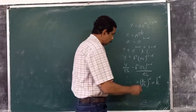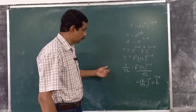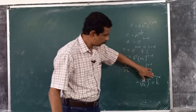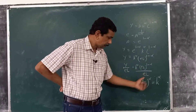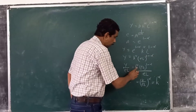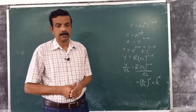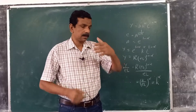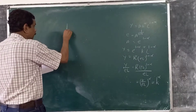We can denote this as k-tilde raised to alpha, where y by eL is y-tilde and k by eL is k-tilde. Note this is capital K, not small letter k. To derive the equation for the change in the K by L ratio — that is, the movement of the economy towards steady state — we differentiate k-dot, which is the derivative of k by eL with respect to time.